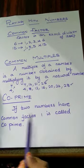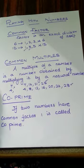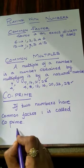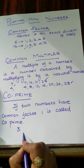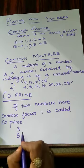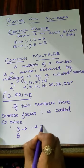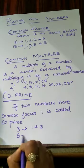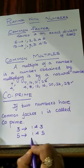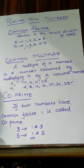Co-prime: if two numbers have only 1 as their common factor, they are called co-prime. For example, select the numbers 3 and 5. The factors of 3 are 1 and 3 only. The factors of 5 are 1 and 5. The only common factor is 1, so these are co-prime.